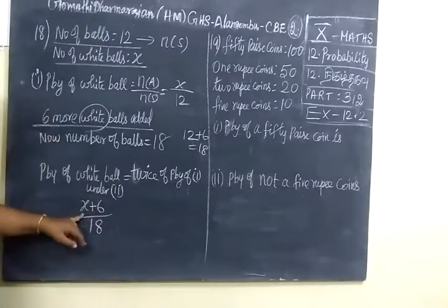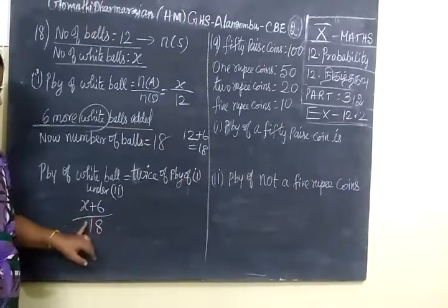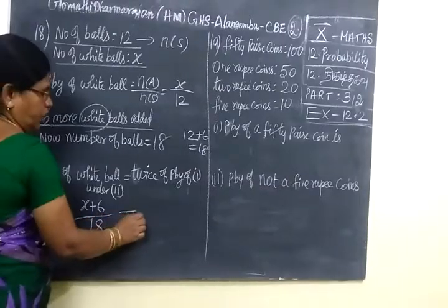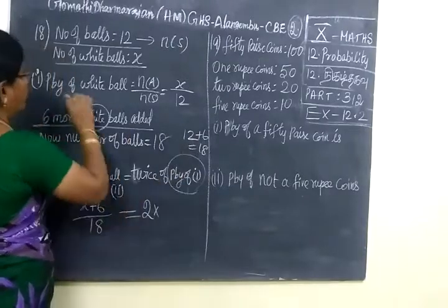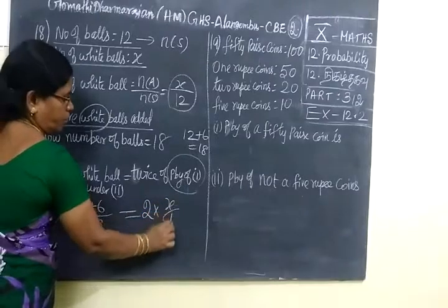That means x plus 6 by 18, because only x white balls, 6 balls added. So x plus 6 by total balls is 18, equal to twice means 2, 2 into probability of 1. Probability of 1, probability of case 1 equals x by 12. So x by 12.